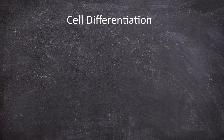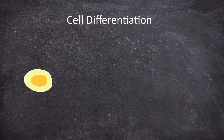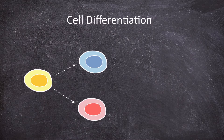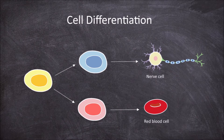In this video we're going to go over cell differentiation. Cell differentiation is the process that occurs in the development of a new cell where it develops specialised structures and functions. In multicellular organisms, cells are specialised for specific functions.